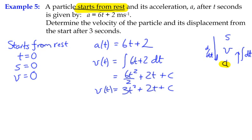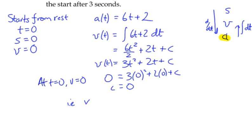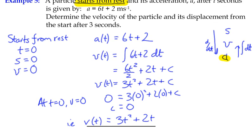Since the particle starts from rest, we have some key information: at t equals 0, v equals 0. Substituting zero for velocity and zero for time, all terms are zero, so C is therefore also equal to zero. This means we can determine the particular function: the velocity is 3t squared plus 2t. We can now use that function to find the velocity at any point.